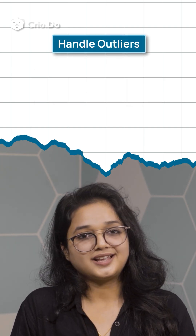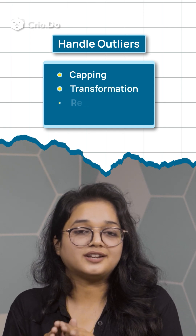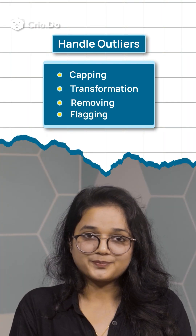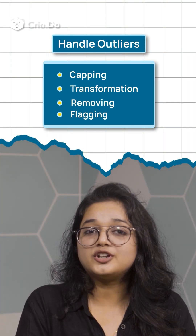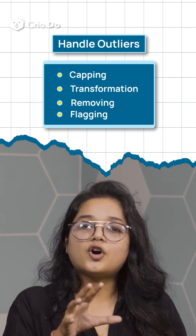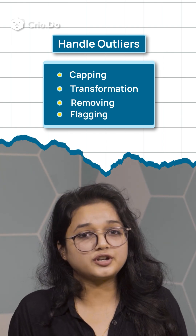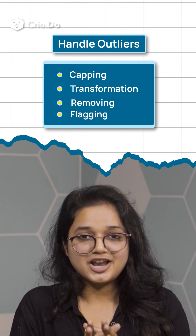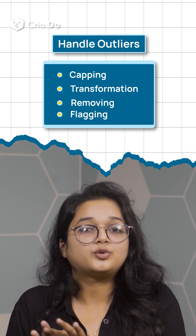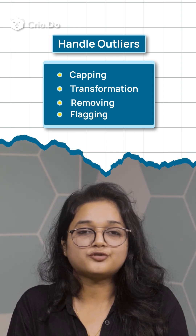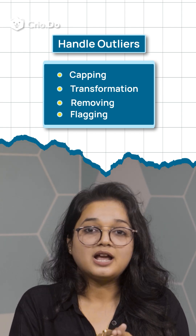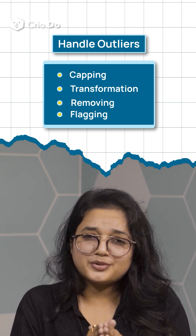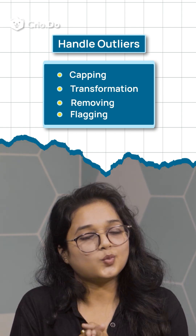Handle outliers. Techniques for handling outliers include: capping — limiting extreme values to a reasonable range; transformation — applying log or square root transformations to reduce the impact of outliers; removing — if the outliers are due to error, they can be removed from the dataset; and flagging — marking outliers for separate analysis if they hold valuable insights.